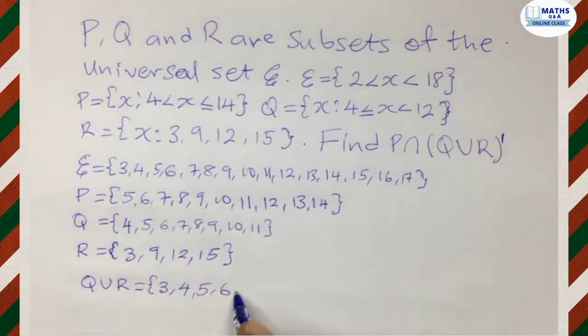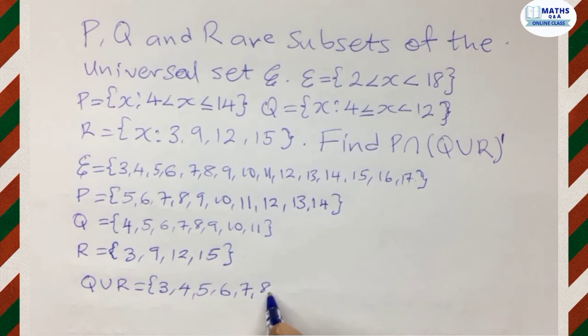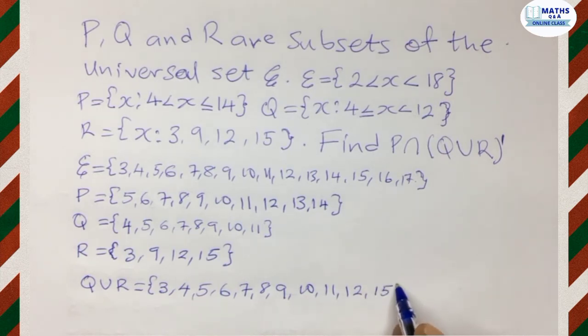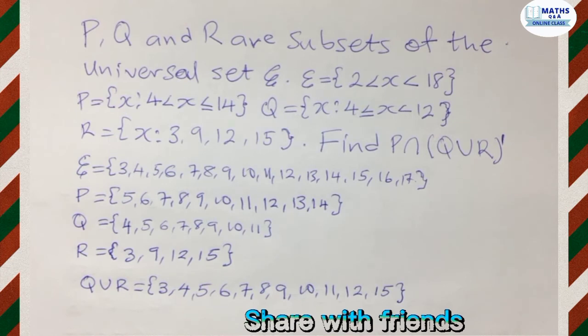6. We have 7, 8, 9. 9 is in both sets. So we write it once. Come to 10. We have 11, 12 and then 15. So that completes the set for the union of Q and R.